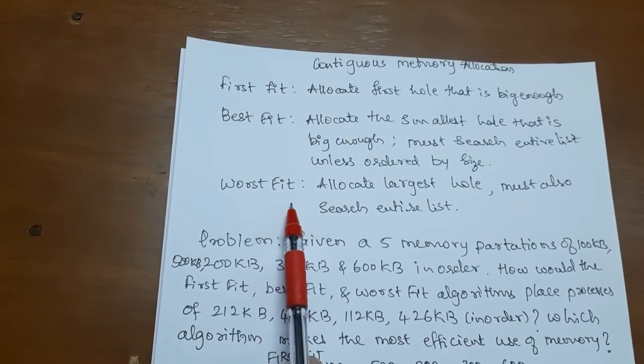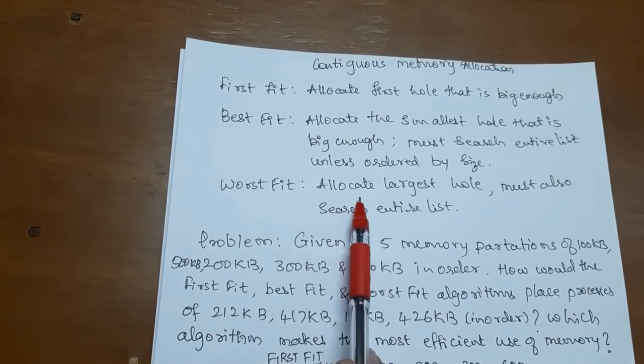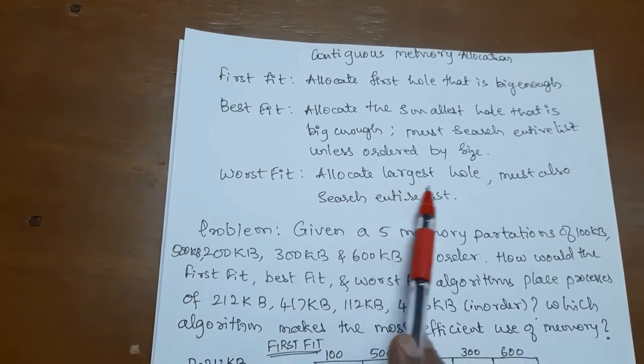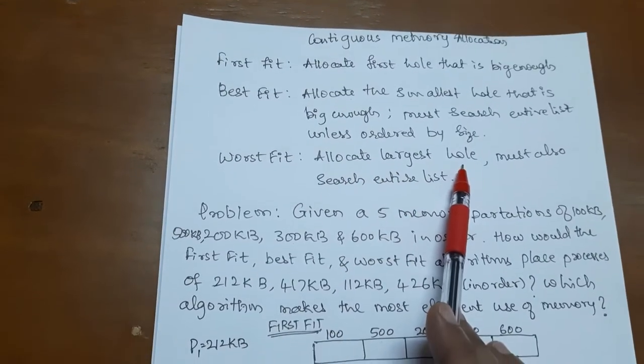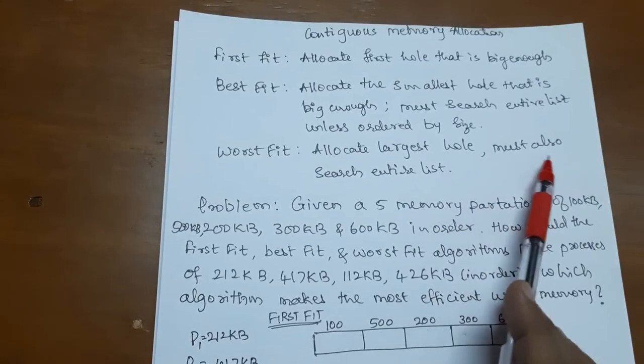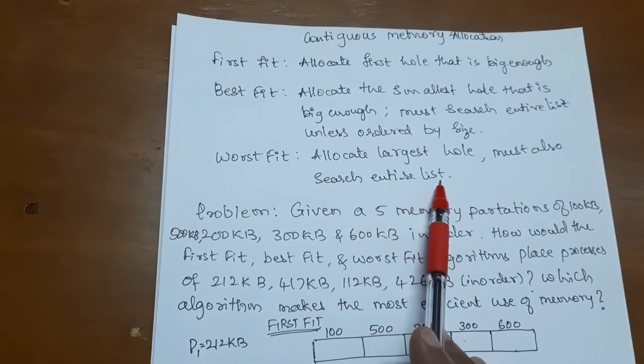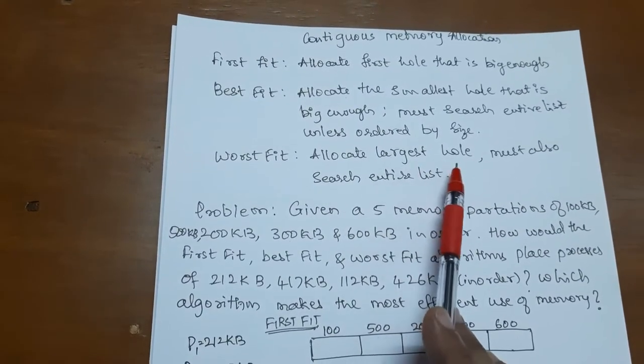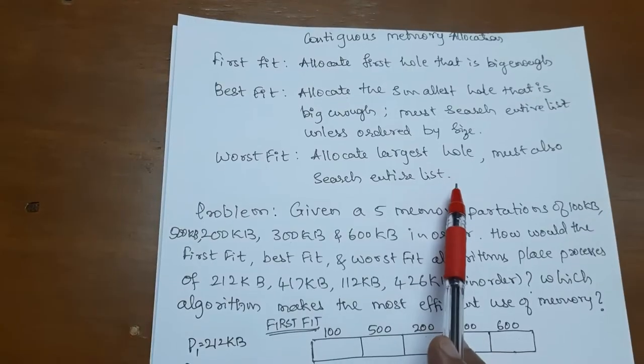The worst fit method allocates the process to the largest hole and must also search the entire list to find that largest hole first.